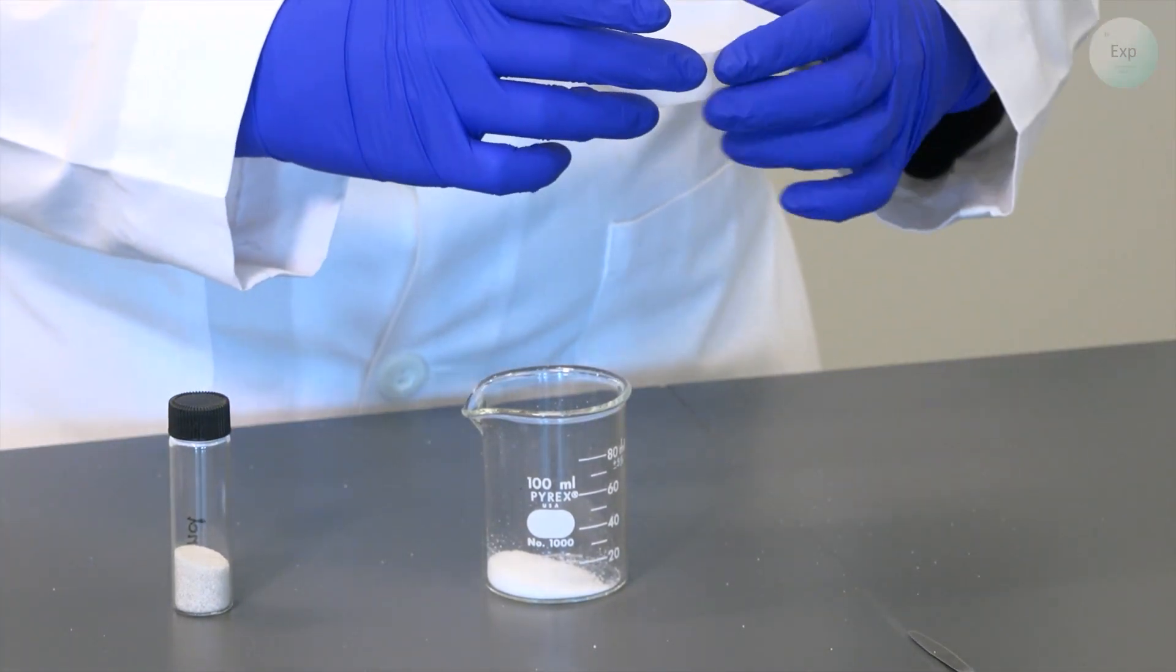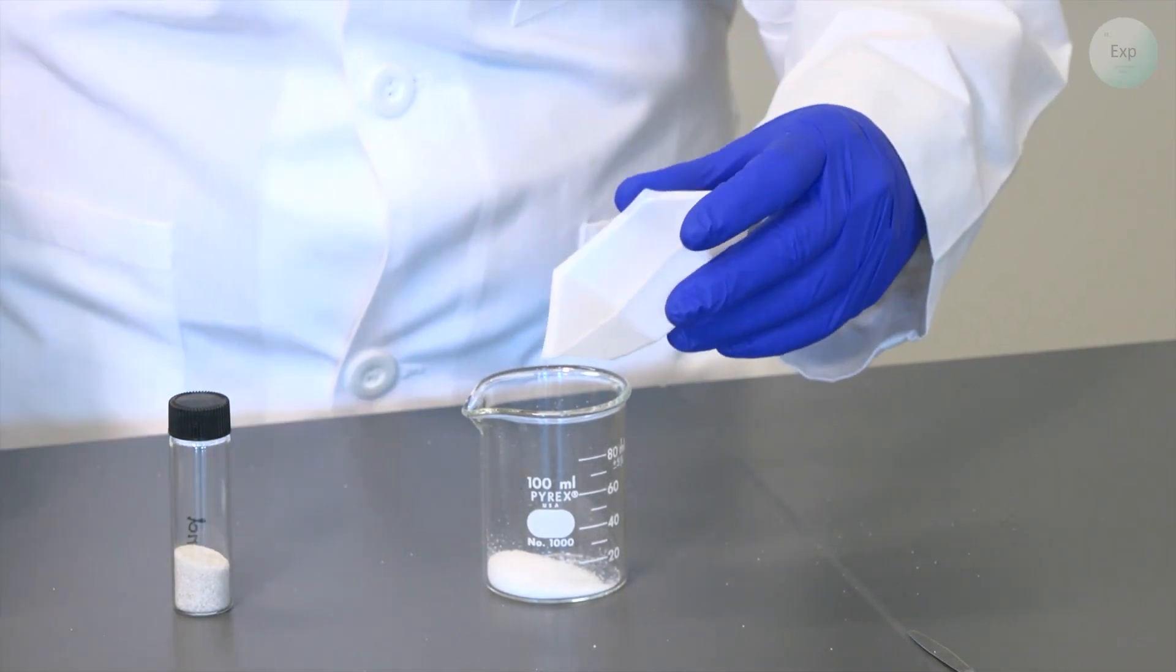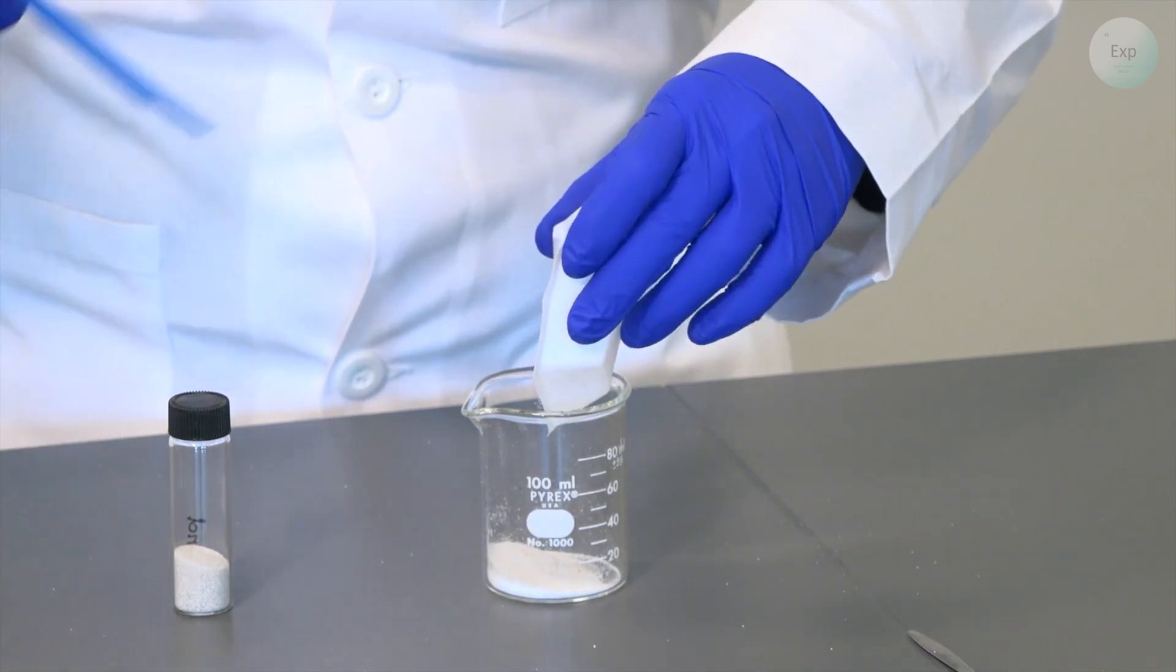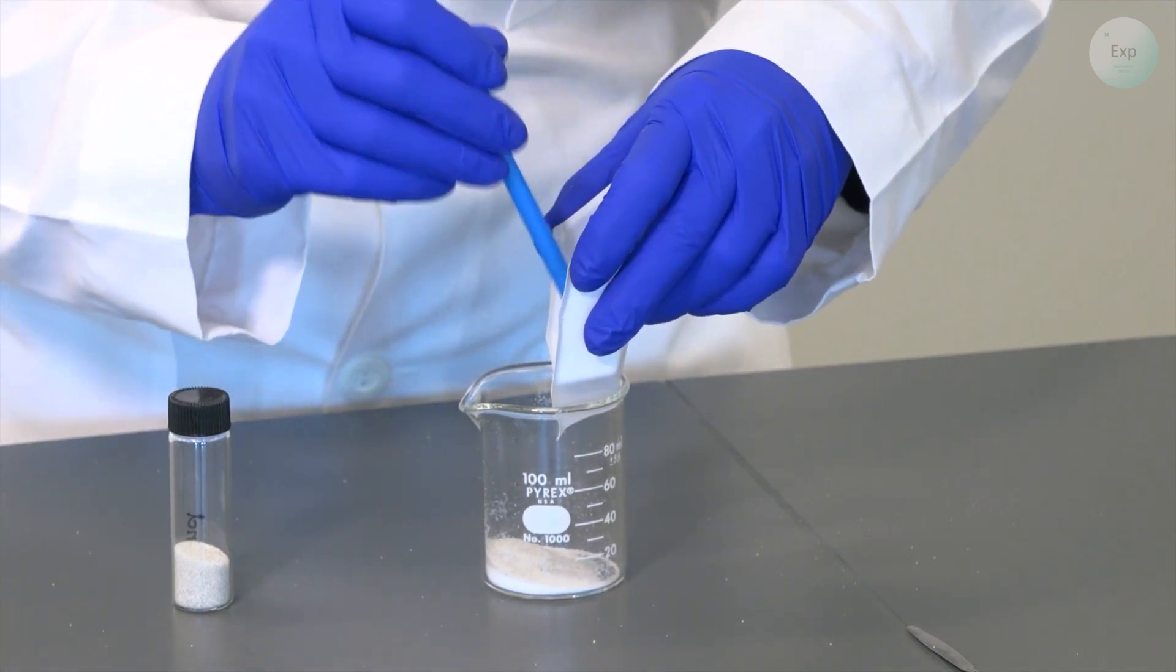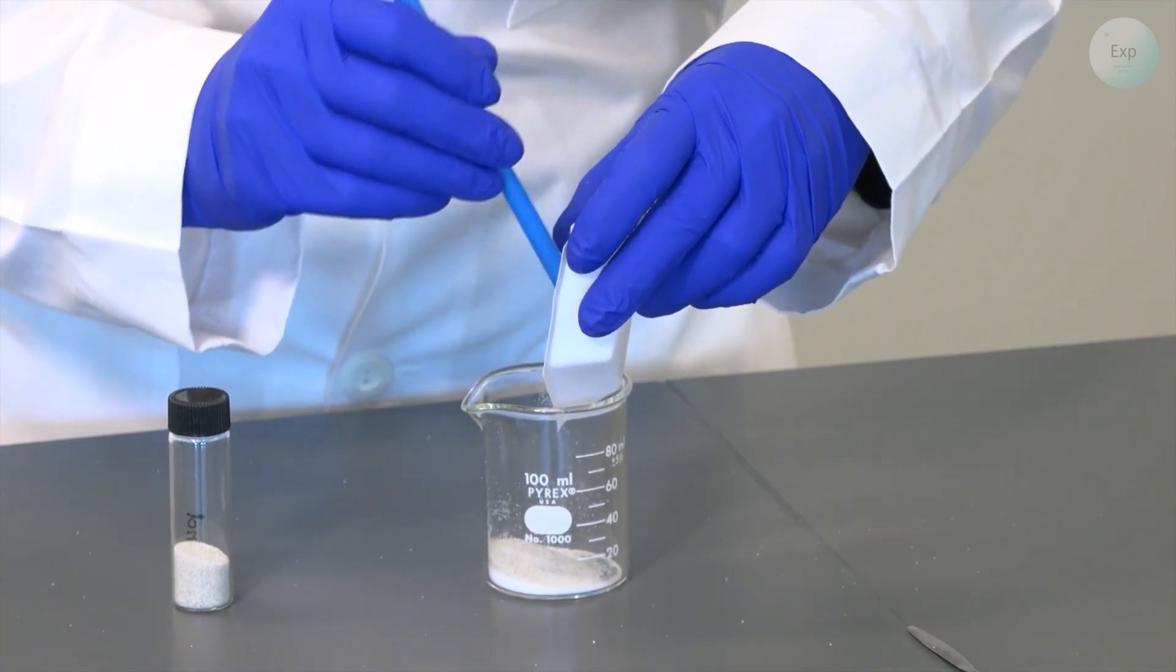Next, I am going to transfer my approximately 5 grams of sand into the container. And if there is something stuck to the weighing boat, I can always scrape it with the spatula I used to weigh out the sand.